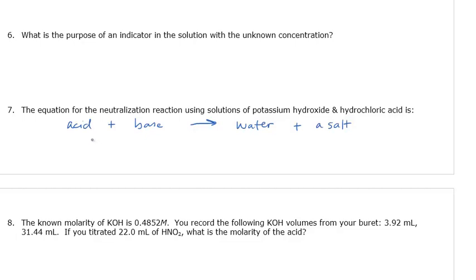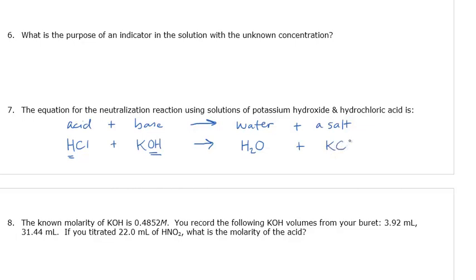That's our general idea for any titration reaction between an acid and a base. In number 7, it asks me to write the equation for potassium hydroxide and hydrochloric acid. Hydrochloric acid is HCl, and potassium hydroxide is KOH. When an acid reacts with a base, the H from the acid and the OH from the base combine to make water — H plus OH becomes HOH, or H₂O — and then a salt, which in this case is KCl, potassium chloride.